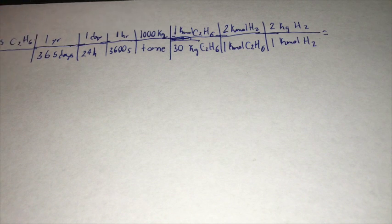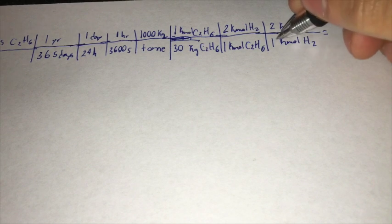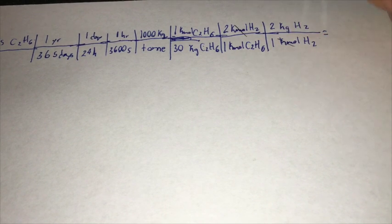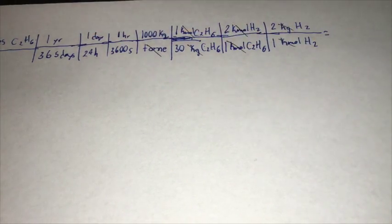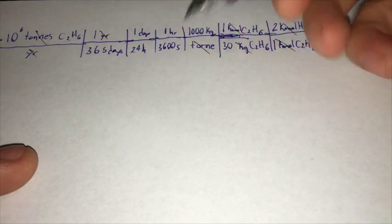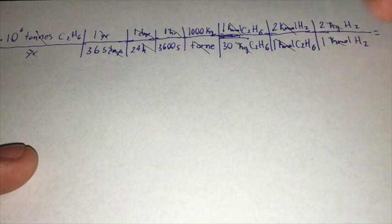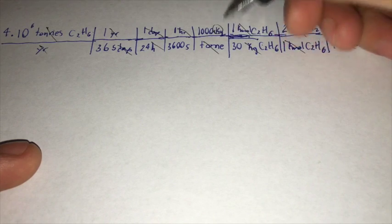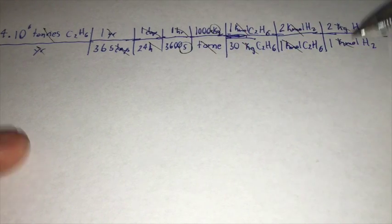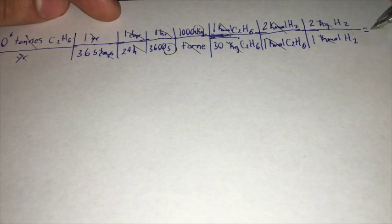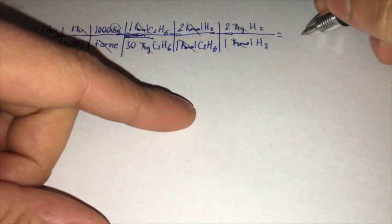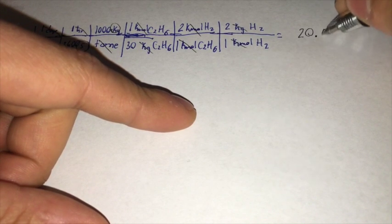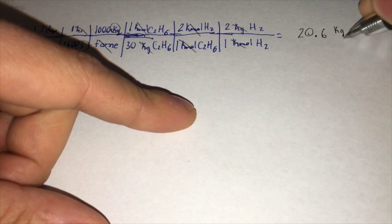That gives us our mass flow rate. We can cancel, and we are left with kilograms and seconds. The mass flow rate of H2, if you pause it and calculate it, you should get 20.6 kilograms per second.